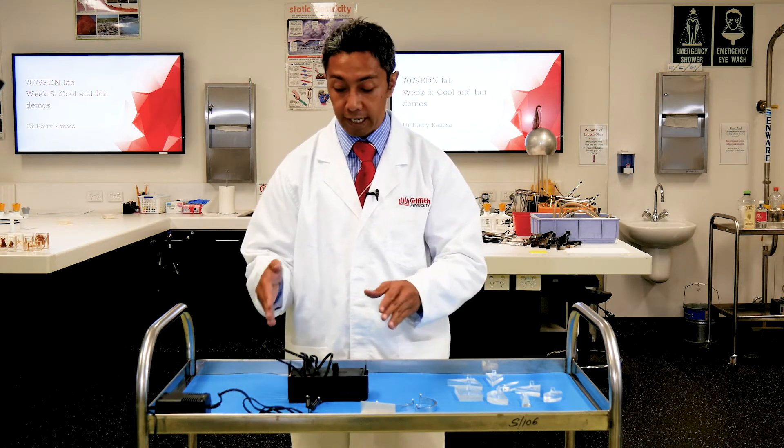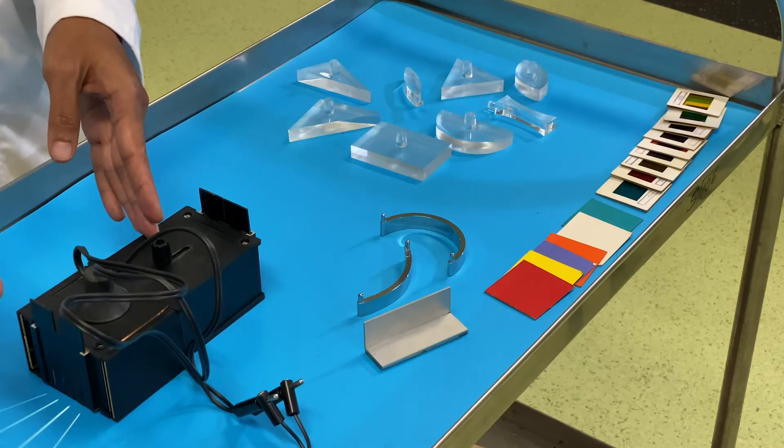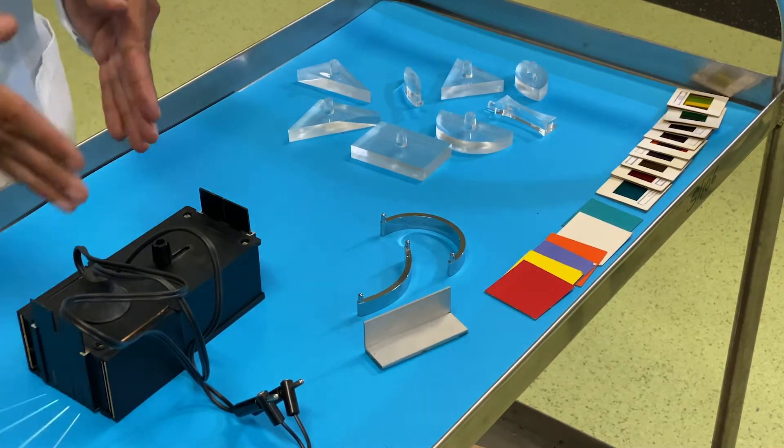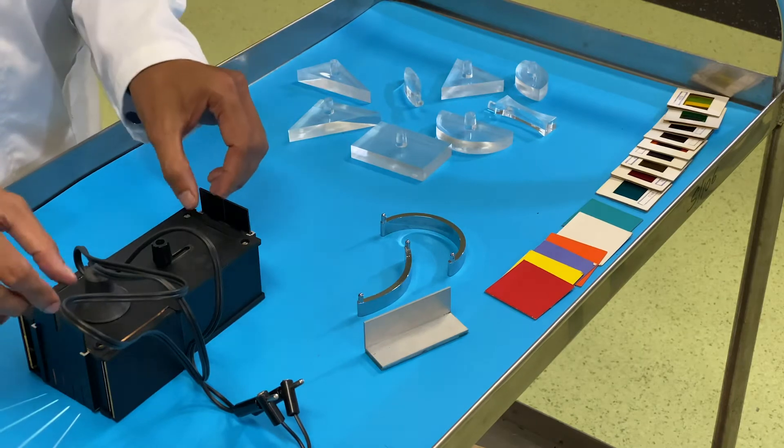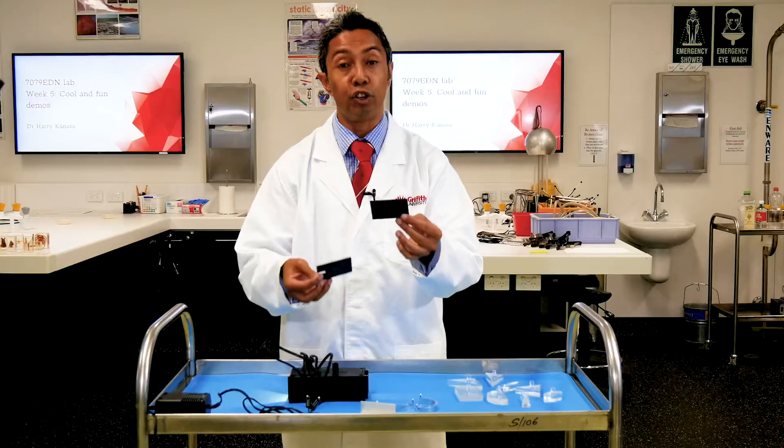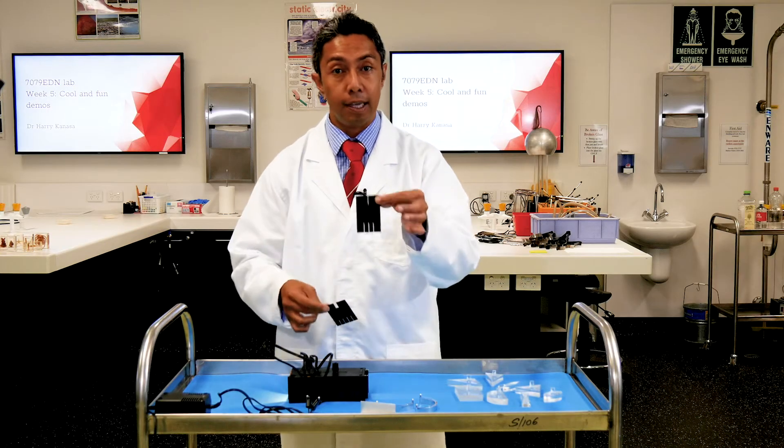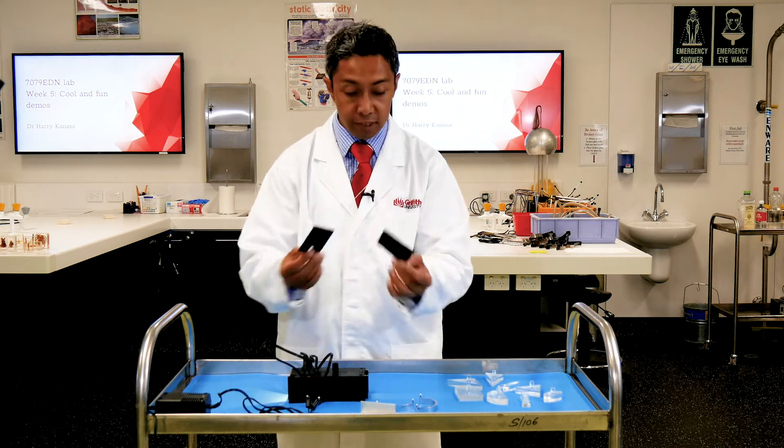What we've got is a light source which can either give us parallel light or divergent light depending upon which end. We've got a number of slits so you can either have a beam, a single slit or various multi-slits.